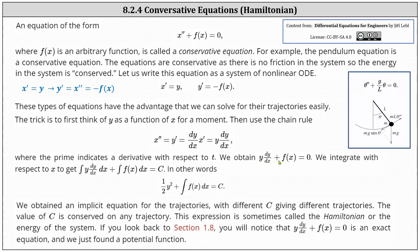We replace x double prime in the original equation with y times dy dx, giving us y dy dx plus f of x equals zero. For the next step, we integrate both sides with respect to x, which gives us the integral of y dy dx dx plus the integral of f of x dx equals c. Simplifying the first integral, the dx terms cancel, giving us one half y squared. So we have one half y squared plus the integral of f of x dx equals c. This is an implicit equation for the trajectories, with different c values giving different trajectories. The value of c is conserved on any trajectory.